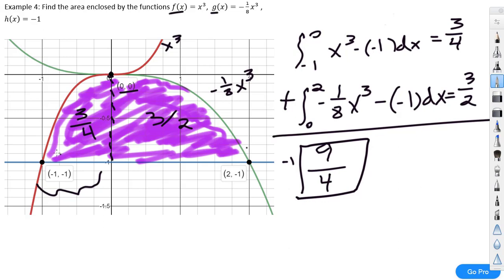So, remember, the key to this is realizing what's your bottom function, what are your top functions, and where do they change? Here, our top function changed from x³ to -1/8 x³, between 0 and 2. Alright. Now that we're done with that one.